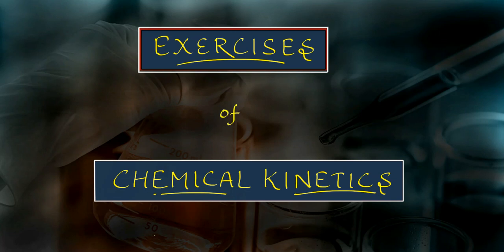Hello everyone. We are solving the exercise of the chapter Chemical Kinetics, and today it's the turn of question number 24. The question says: Consider a certain reaction A gives product with K equals to 2.0 into 10 to the power minus 2 second inverse. Calculate the concentration of A remaining after 100 seconds if the initial concentration of A is 1 mole per liter.